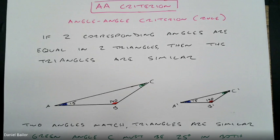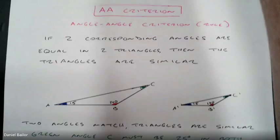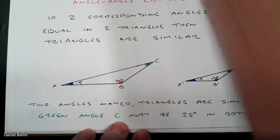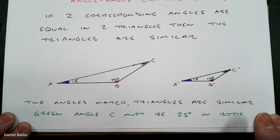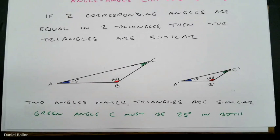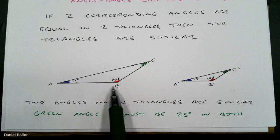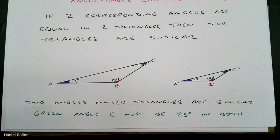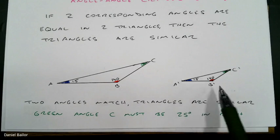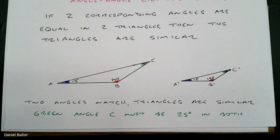The reason it works is that if two angles match, the triangles are similar. In fact, you know that the third angle in both triangles has to be 25 degrees, because a triangle has only 180 degrees. So we know they are similar if we just know two of them — we do not need all three. With two angles, you have enough information to find the third, so if two angles match, all three are equal and the triangles are similar.